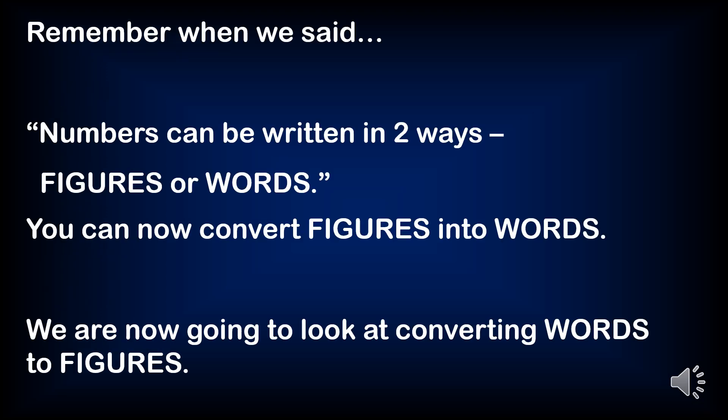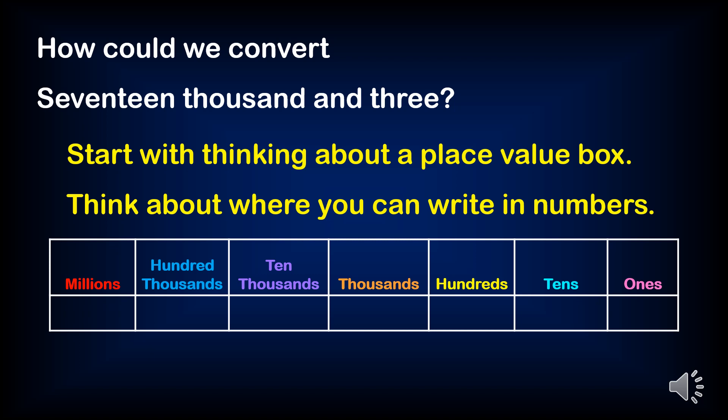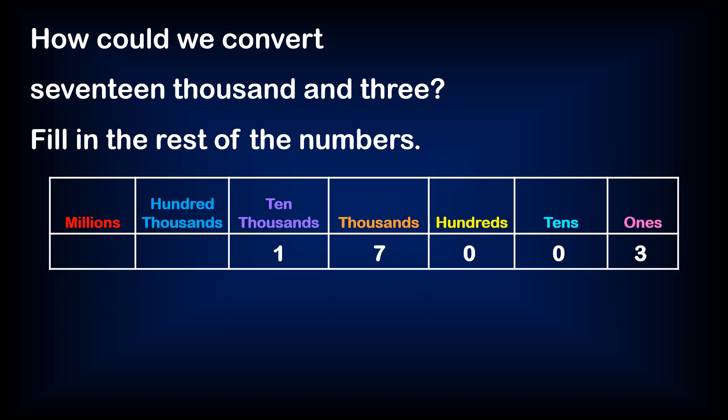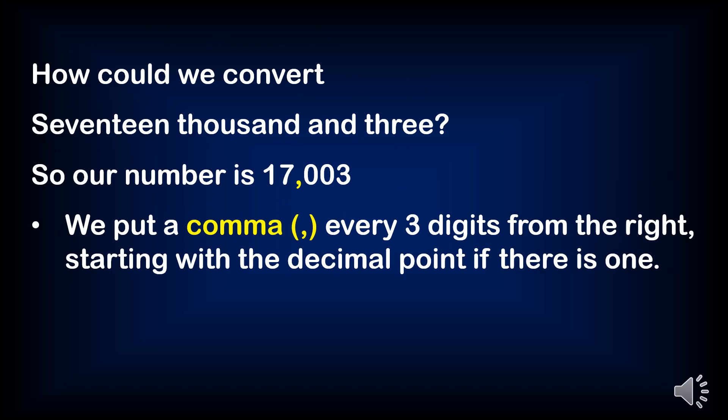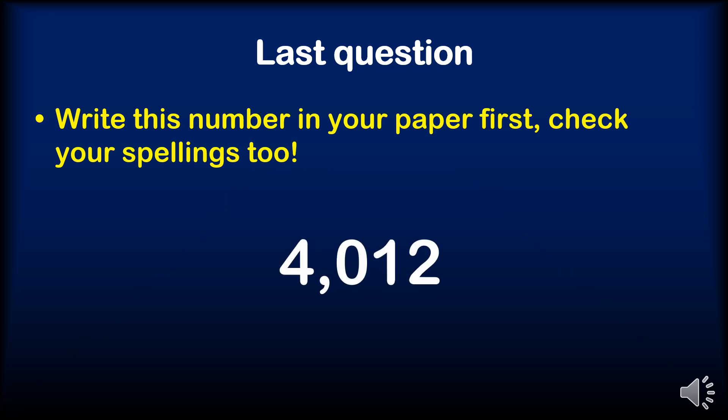Practice exercises. Remember when we said numbers can be written in two ways — figures or words? You can now convert figures into words. We are now going to look at converting words to figures. How could we convert seventeen thousand and three? You start with thinking about the place value box. Think about where you can write in numbers. We put a comma every three digits from the right, starting with the decimal point if there is one. Last question: write this number in your paper. First, check your spellings too.